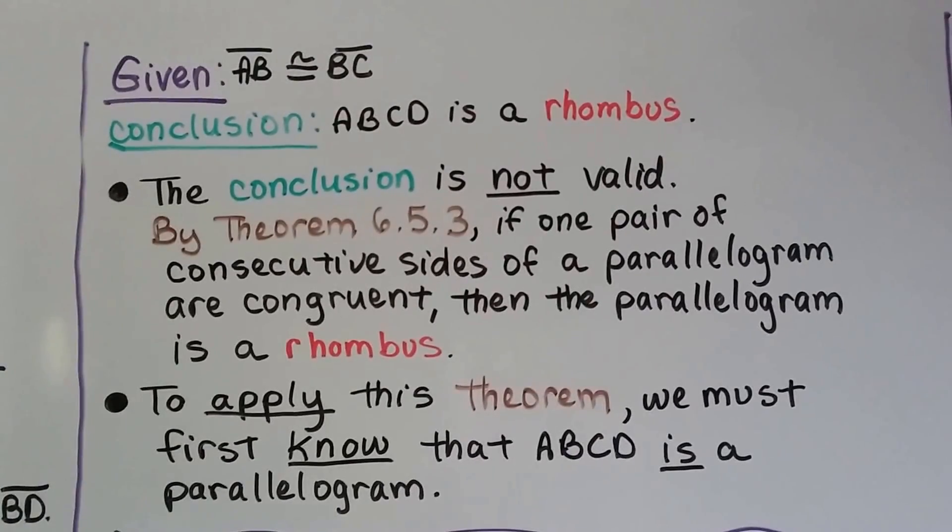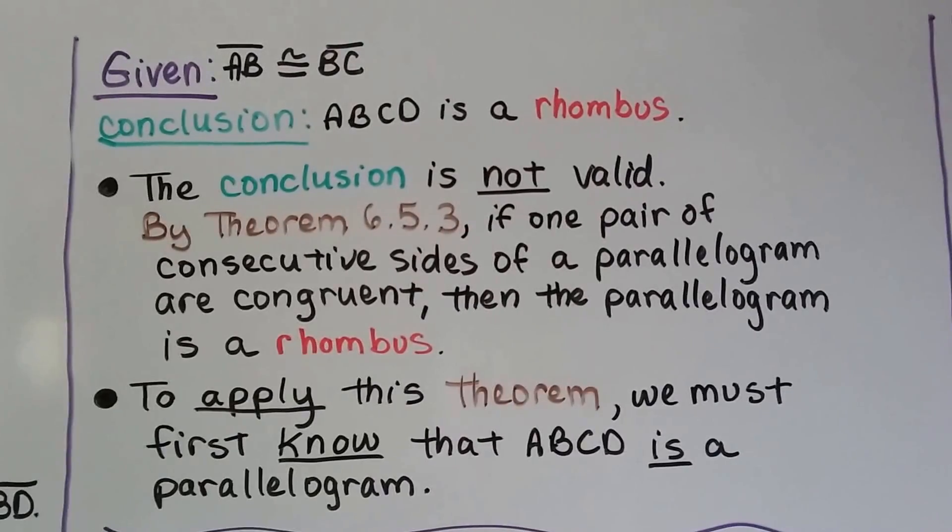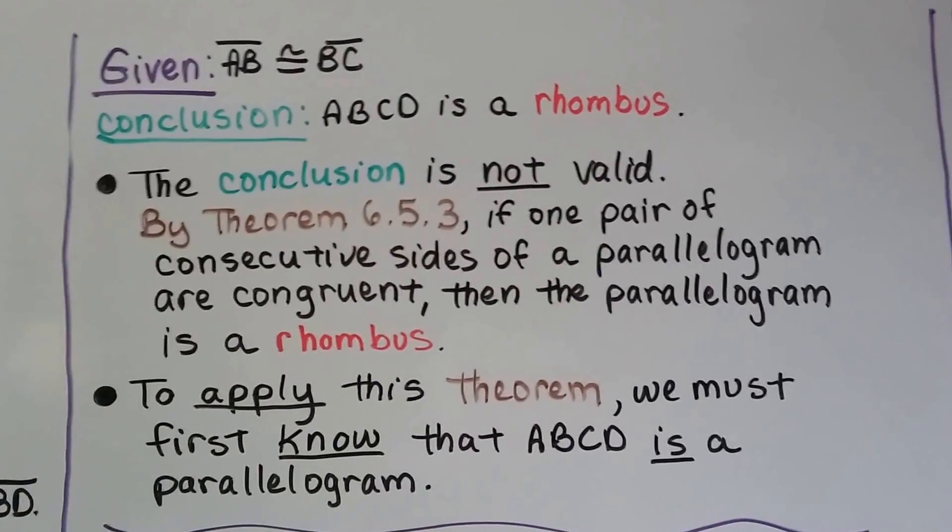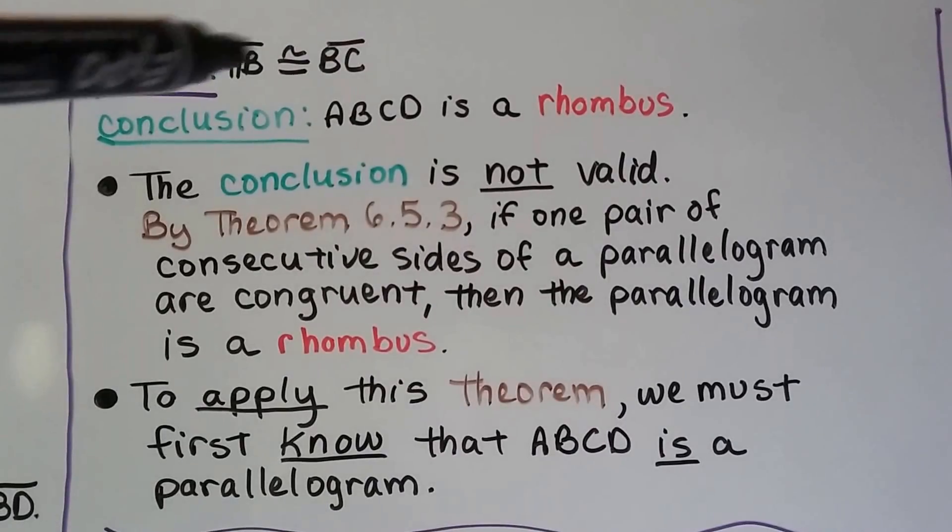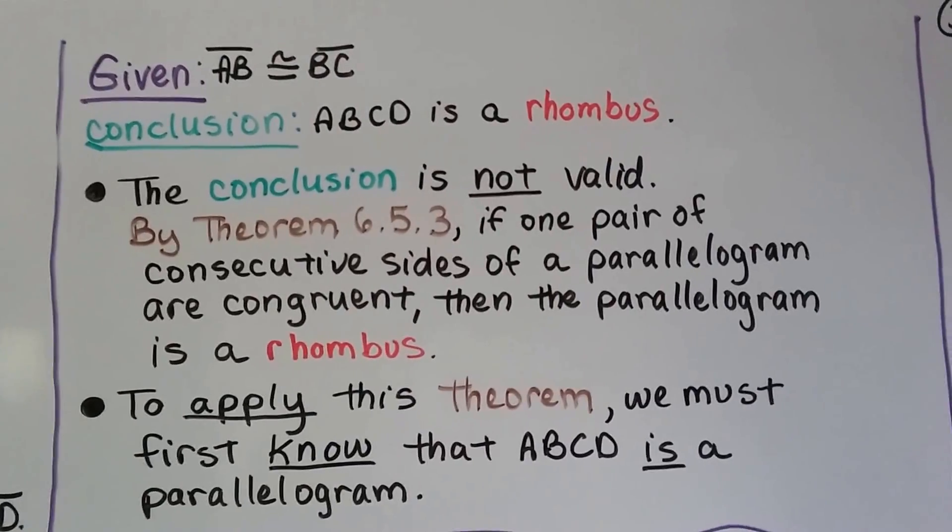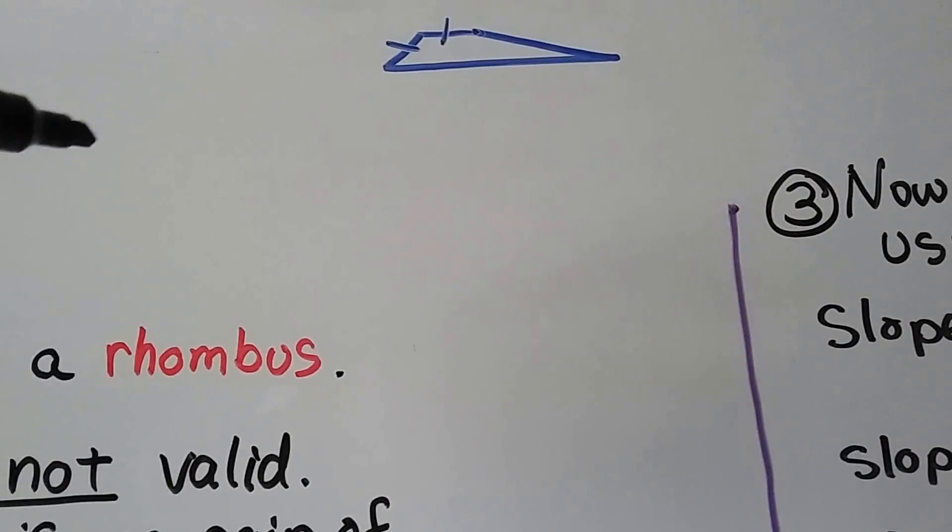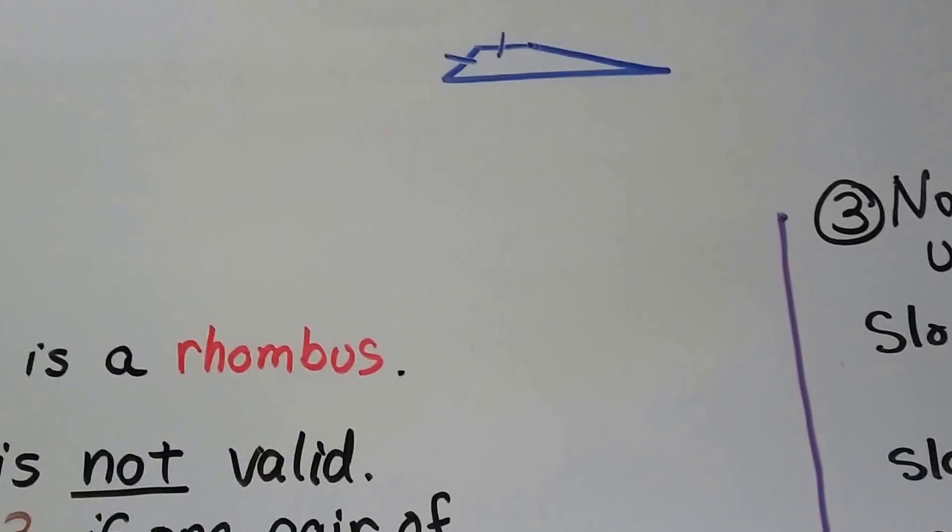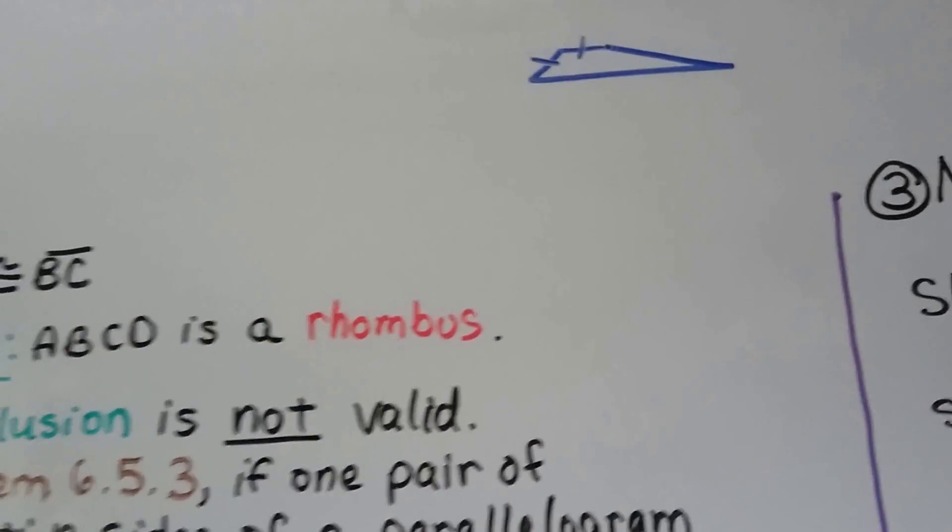By theorem 6.5.3 from our previous video, if one pair of consecutive sides of a parallelogram are congruent, then the parallelogram is a rhombus. But to apply this theorem, we must first know that ABCD is a parallelogram. And that's all it's giving us. So all we know is we have a figure with two congruent sides. What if we had a shape like this, and this side is congruent to this side? Well, it's got four sides and two sides are congruent, but that's not a rhombus. That looks like a trapezoid to me.